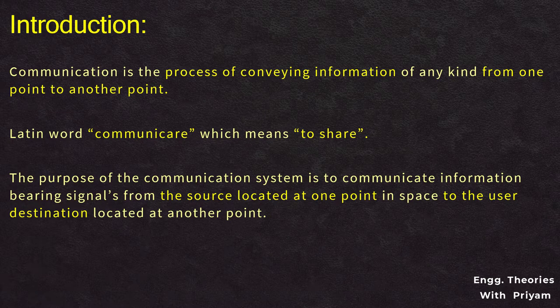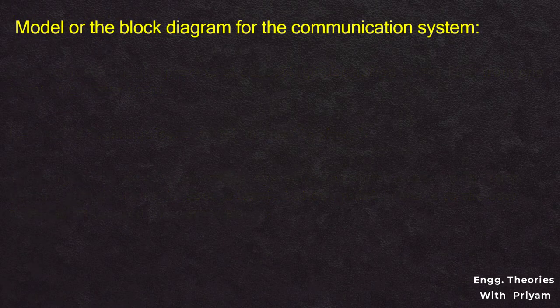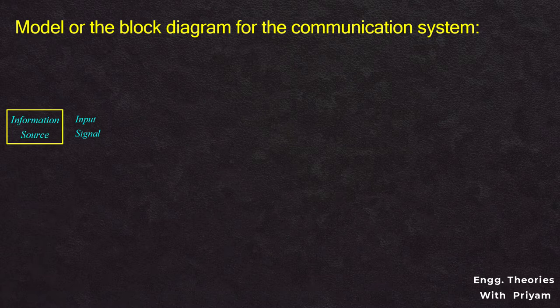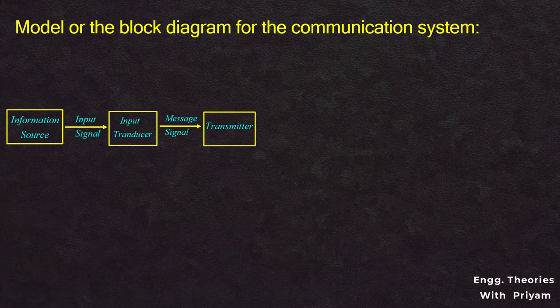Let's see the block diagram of the communication system. The input signal generated by the information source is given as input to the input transducer. The input transducer converts this input signal to the message signal and gives it as input to the transmitter. The transmitter takes the signal from the input transducer and makes it ready for transmission by changing its frequency and energy.